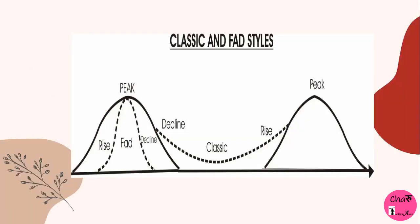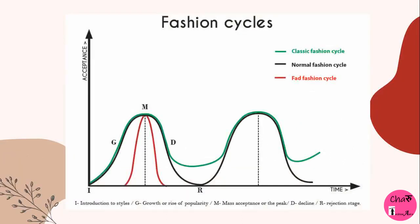Here we can see a graph comparing the normal fashion cycle to fads and classics. The solid black line represents the normal fashion cycle. The green line represents the classic cycle — classics are never-ending, evergreen fashions that repeat themselves over time with some alterations, but the basic style remains the same. The red line represents the fad cycle.